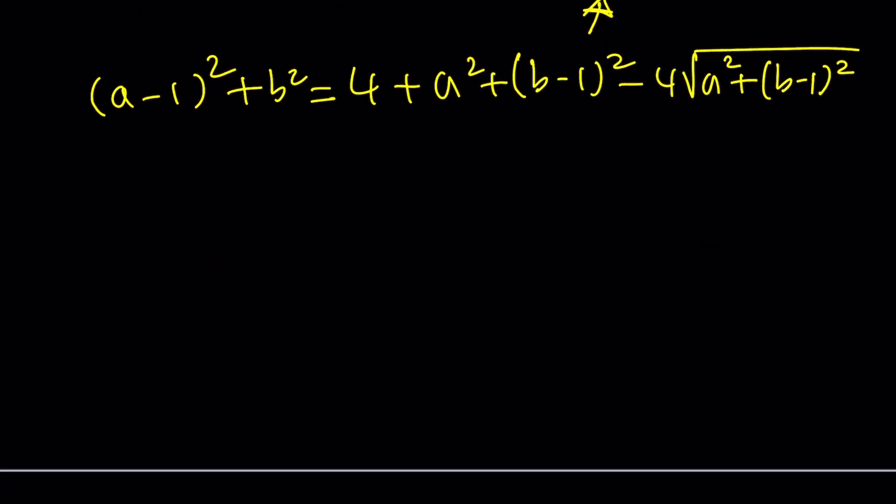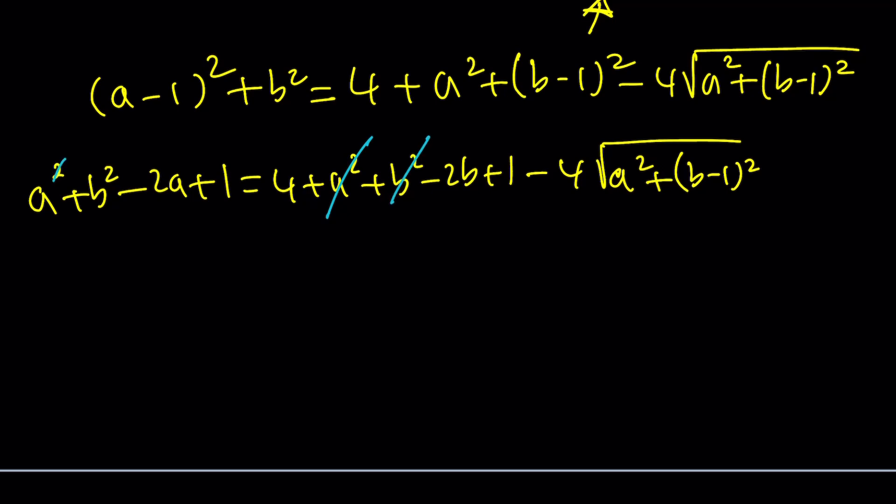So very cool. Notice that when I expand it, I'm going to get A squared plus B squared minus 2A plus 1. Right? And then on the right-hand side, I'm going to get 4 plus A squared plus B squared minus 2B plus 1, and then minus 4 times this radical A squared plus B minus 1 squared. And then notice that A squared plus B squared is going to cancel out. Right? Isn't that cool? 1 is going to cancel out. Super duper nice.